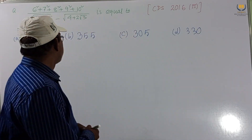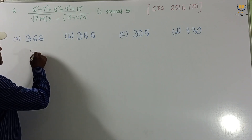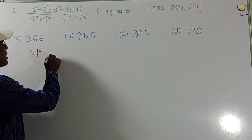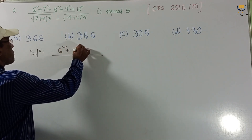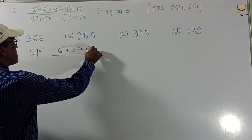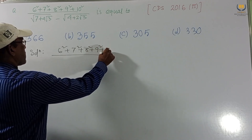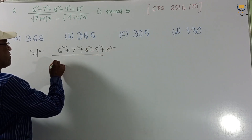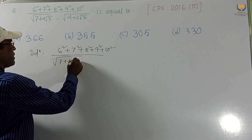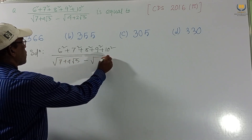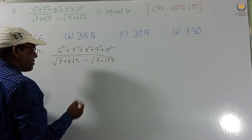So we want to solve this problem. Solution start. Rewriting this line: 6² + 7² + 8² + 9² + 10² divided by √(7 + 4√3) − √(4 + 2√3).